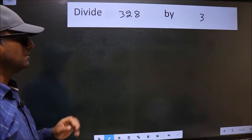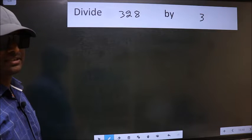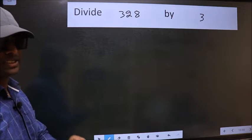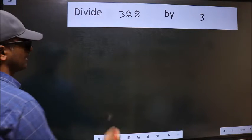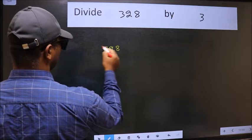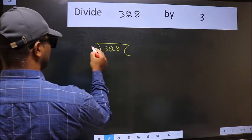Divide 328 by 3. To do this division, we should frame it in this way: 328 and 3 here.